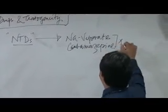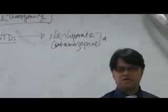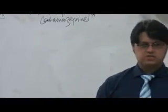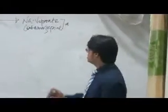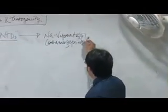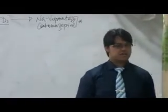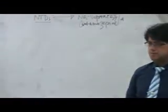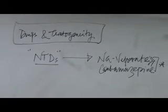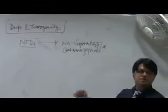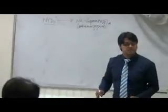Sodium valproate and carbamazepine are associated with neural tube defects. Carbamazepine is more associated with neural tube defects, but carbamazepine is less likely than valproate. Carbamazepine is more safer than any other drugs available.